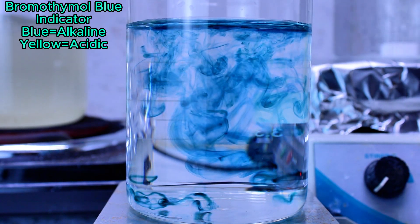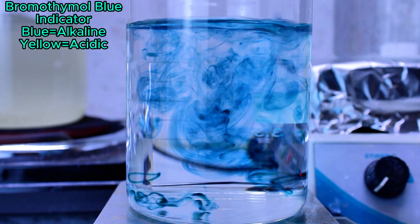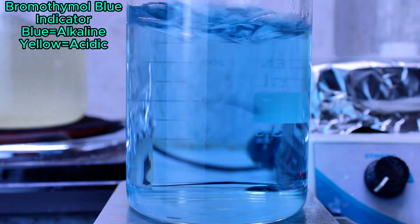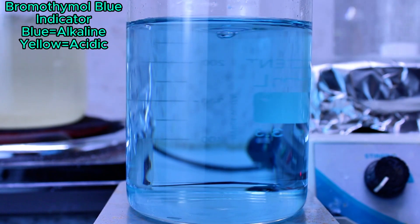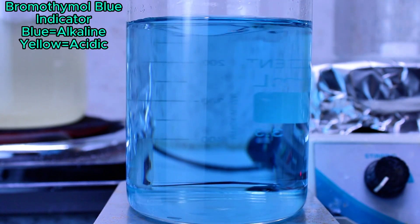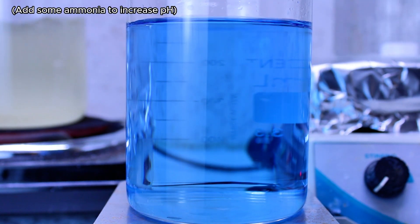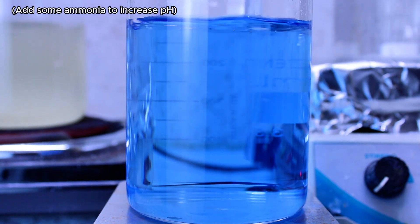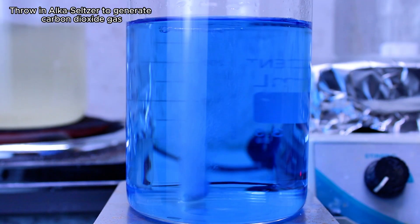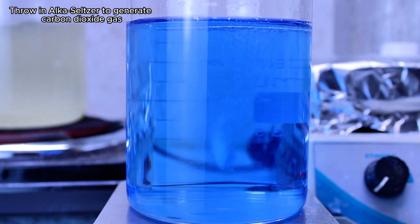Bromothymol blue is an acid base indicator that becomes blue at high pHs indicating an alkaline environment, and it becomes green and then yellow at lower and lower pHs. I also add a bit of ammonia so that the reaction is more vibrant, and then I throw an Alka-Seltzer in the water which immediately begins to bubble as it releases carbon dioxide gas into the solution.